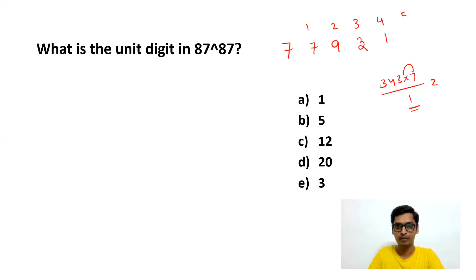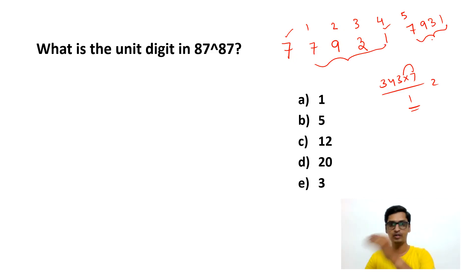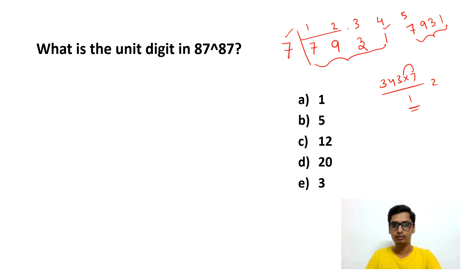If you take 7 power 5, again it will be 7 into 1, so the last digit will be 7. So the cyclicity will continue — that means 7, 9, 3, 1, 7, 9, 3, 1. For every 4 times, the same number will repeat. So 7, 9, 3, 1 will repeat for every 4 times. We can see the cyclicity of the number 7 is 4.